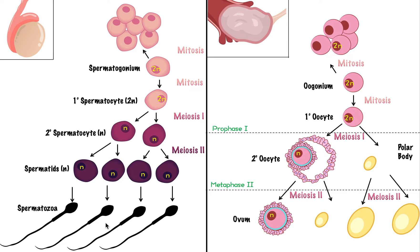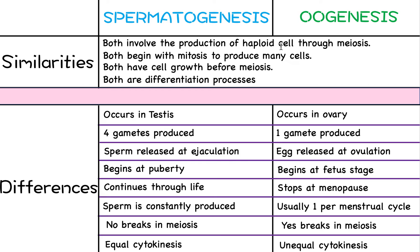Throughout both processes there is also cell growth — the cells get bigger and bigger, even if it's not always clear on simplified diagrams. Another similarity: both processes take a diploid stem cell — one with the normal full amount of DNA — and produce haploid cells with half the amount of DNA. That's what's unique about gametes: they have half the normal DNA, written as n, whereas normal body cells are 2n. So both involve production of haploid cells.